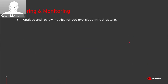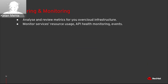The next step is metering and monitoring. Analyzing and reviewing metrics for your overcloud infrastructure is the first thing any monitoring system is expected to do. We also review and report service resource usage, API health monitoring, various events. If a container is down, it reports those events. You can create custom alerts, and it will put an alert to your notification system: 'Hey, this container is down, you need to look at it.' That is when your monitoring team gets back to the system and sees what needs to be fixed.